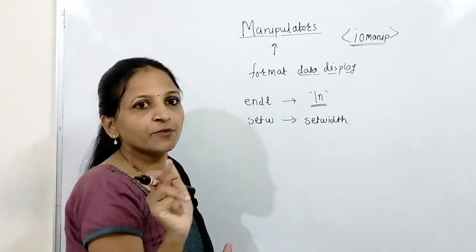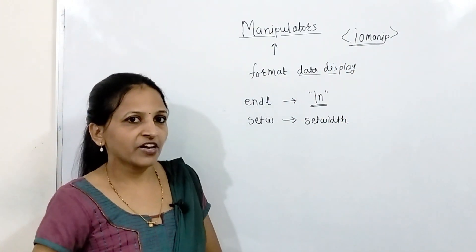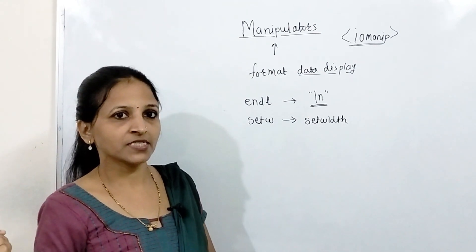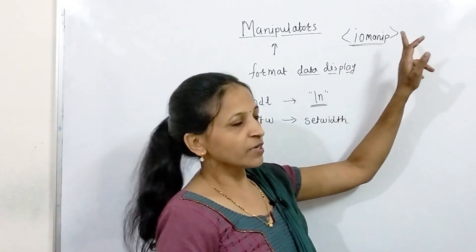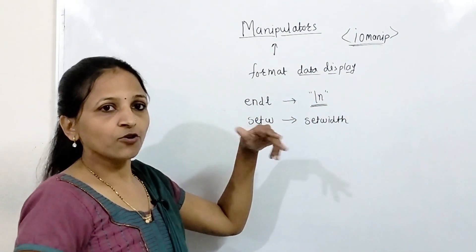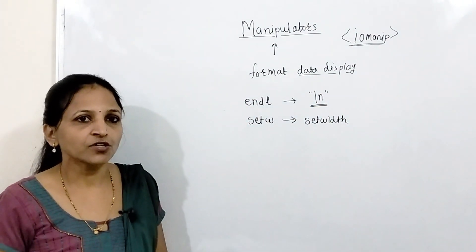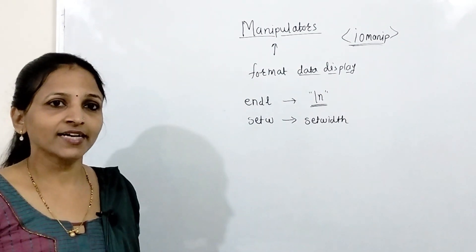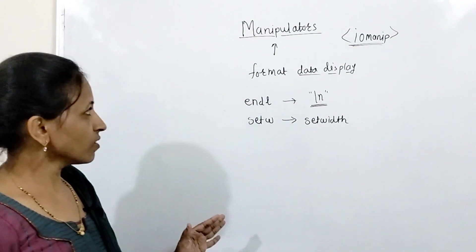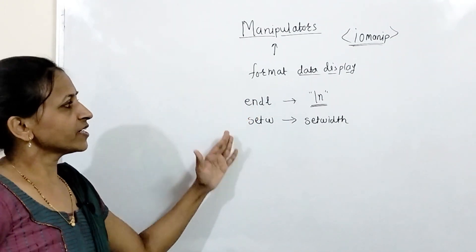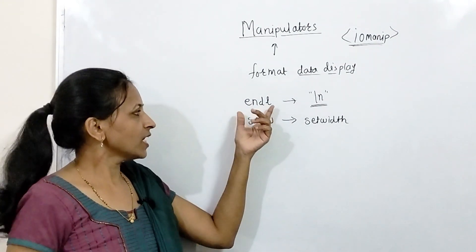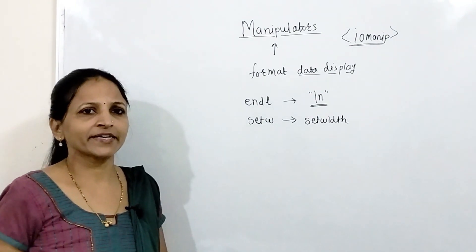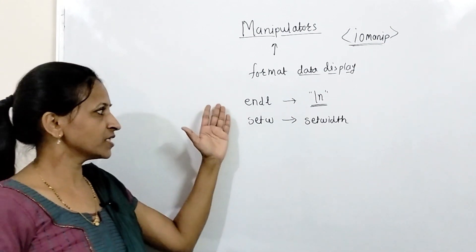These manipulators are present in the iomanip.h header file. If you are using an older compiler like Turbo C++, you have to include iomanip.h. This header file includes manipulators or operators for formatting data display. From those, two manipulators I am going to explain: endl and setw. These two are the most commonly used manipulators.